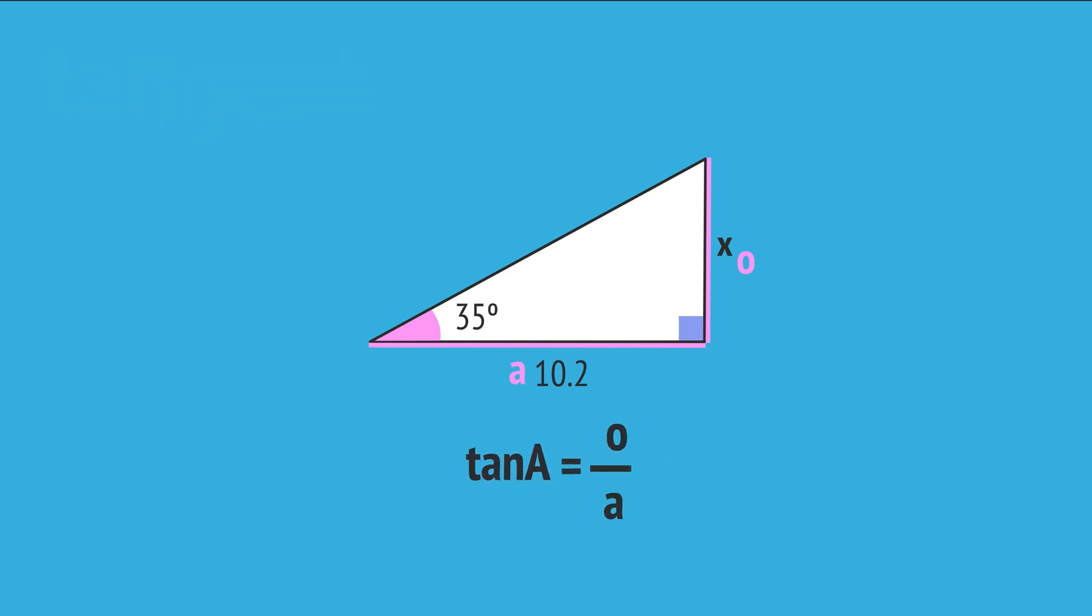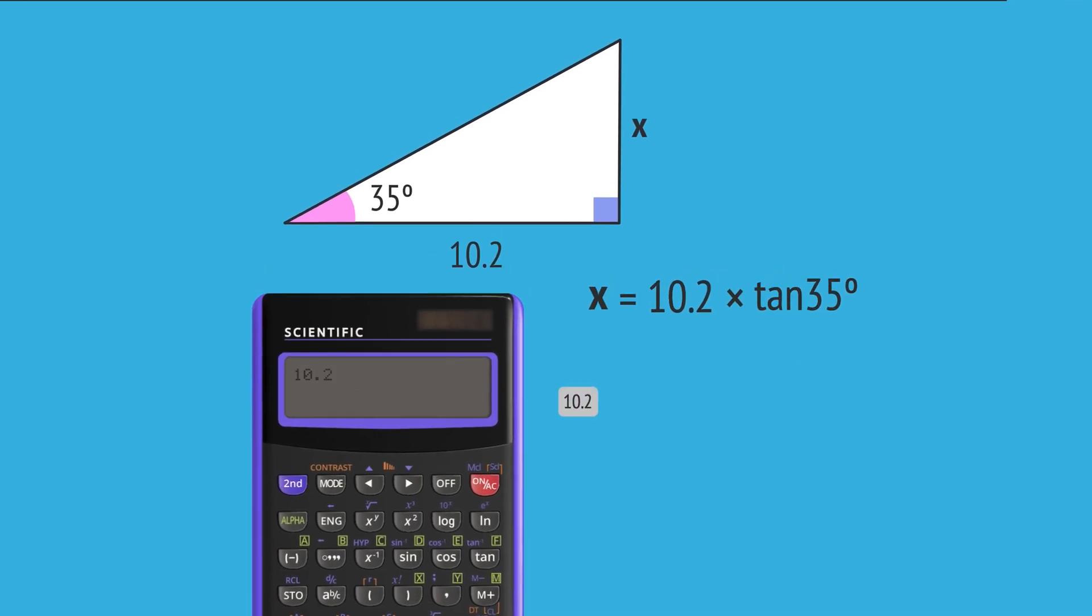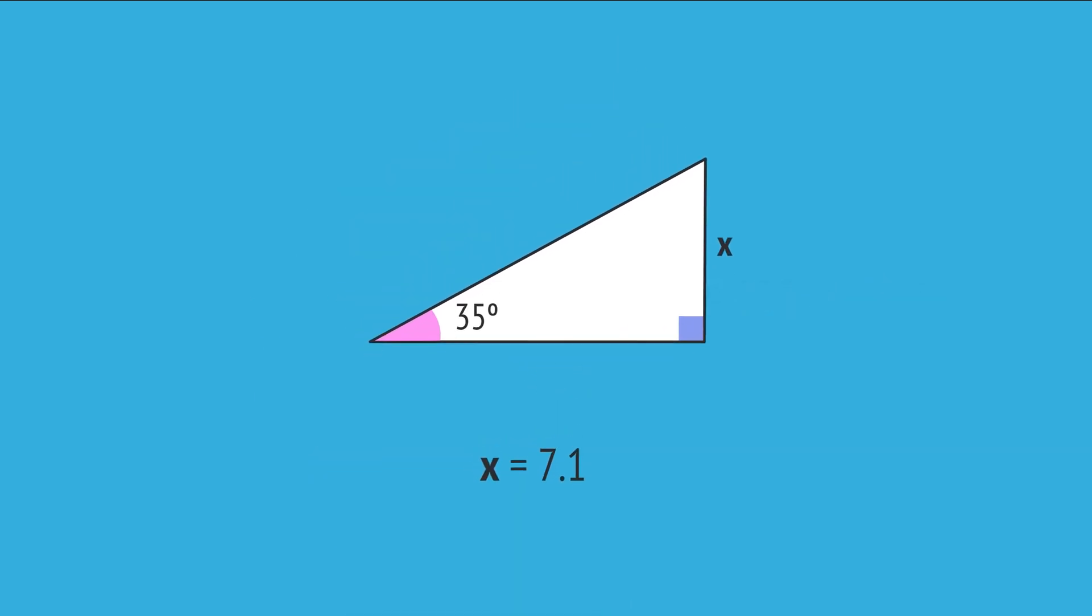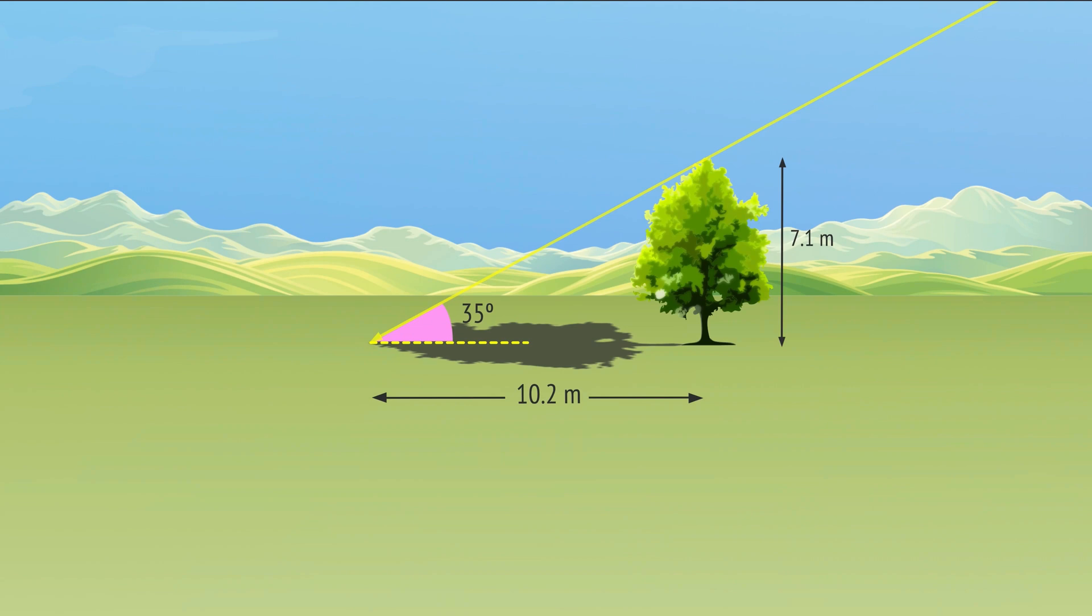Substituting the values into the formula, we write tangent 35 equals x over 10.2. To get x on its own, we multiply tangent 35 by 10.2. Then we enter this into a calculator, which tells us that x equals 7.1 meters when rounded to one decimal place. And so, the tree's height is 7.1 meters.